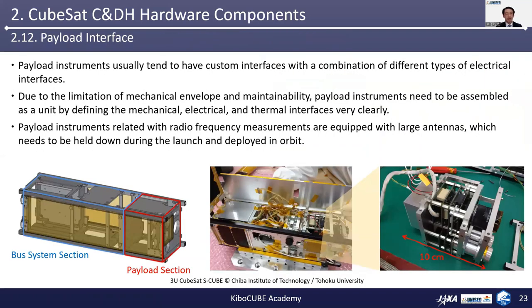For the last section of this chapter, I'd like to discuss the payload interface. Payload instruments usually tend to have custom interfaces with a combination of different types of electrical interfaces. Due to the limitation of mechanical envelope and maintainability, payload instruments need to be assembled as a unit by defining the mechanical, electrical, and thermal interfaces very clearly. Payload instruments related to radio frequency measurements are often equipped with large antennas, which need to be folded down during launch and deployed in orbit.